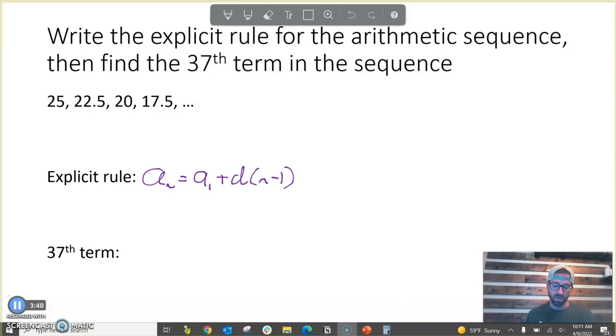Well, in this particular case, our first term is 25. Our common difference, because this is decreasing, because we're subtracting, this is going to be minus 2.5 to the n minus 1. So, here's our explicit rule right here. And now, let's learn how to actually use that explicit rule.